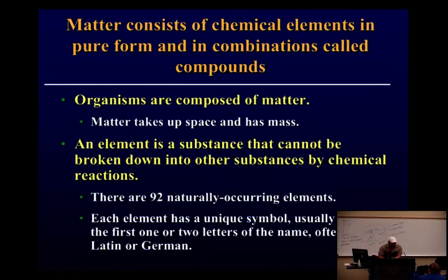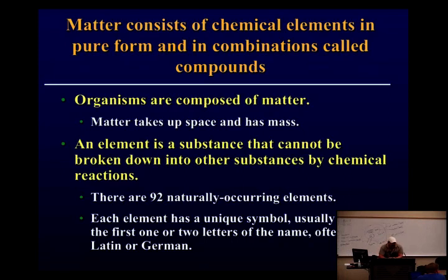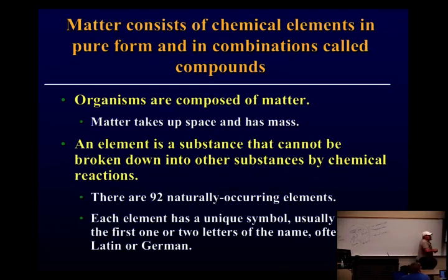On to Chapter 2 — this chapter is basically chemistry. In order to understand biology, you have to understand chemistry, because we exist because of chemical reactions. The first thing is that organisms are composed of matter. Matter is something that has mass and takes up space. An element is a substance that can't be broken down any further by a chemical reaction.